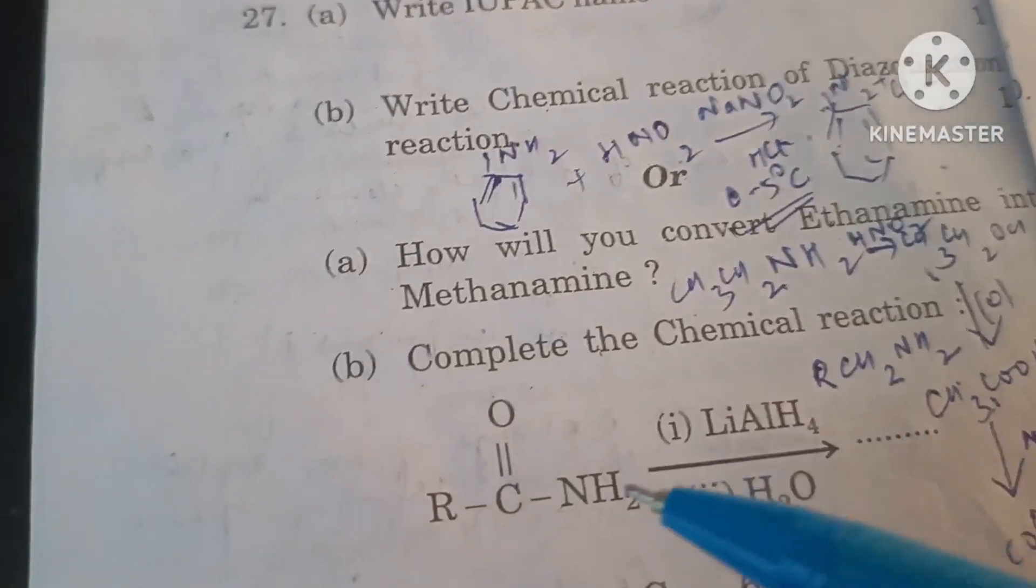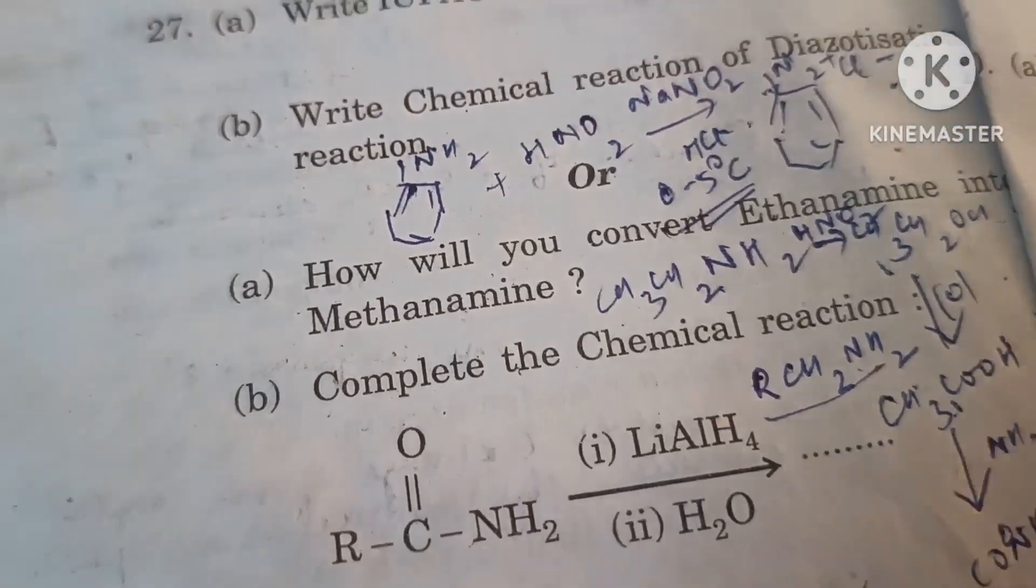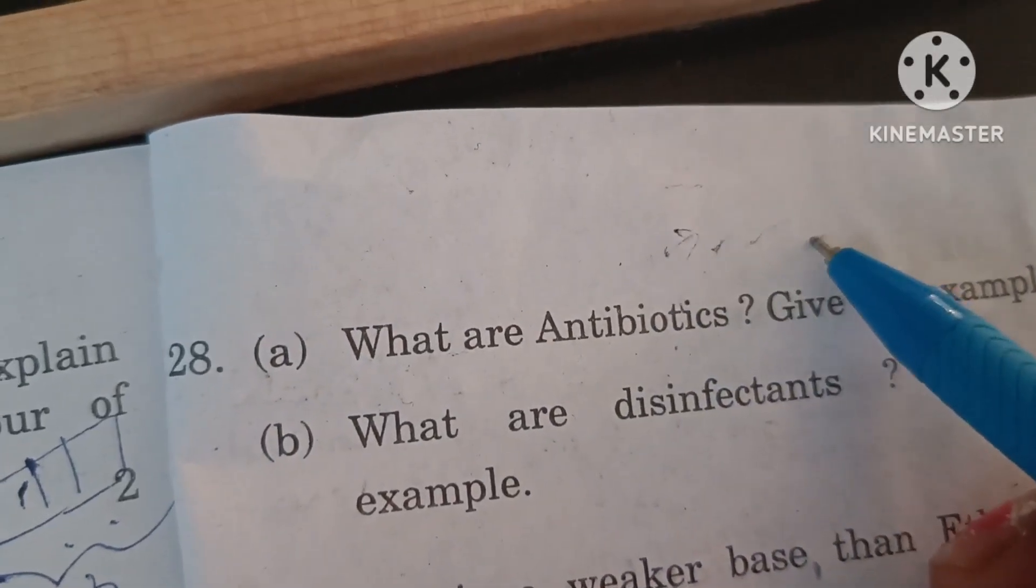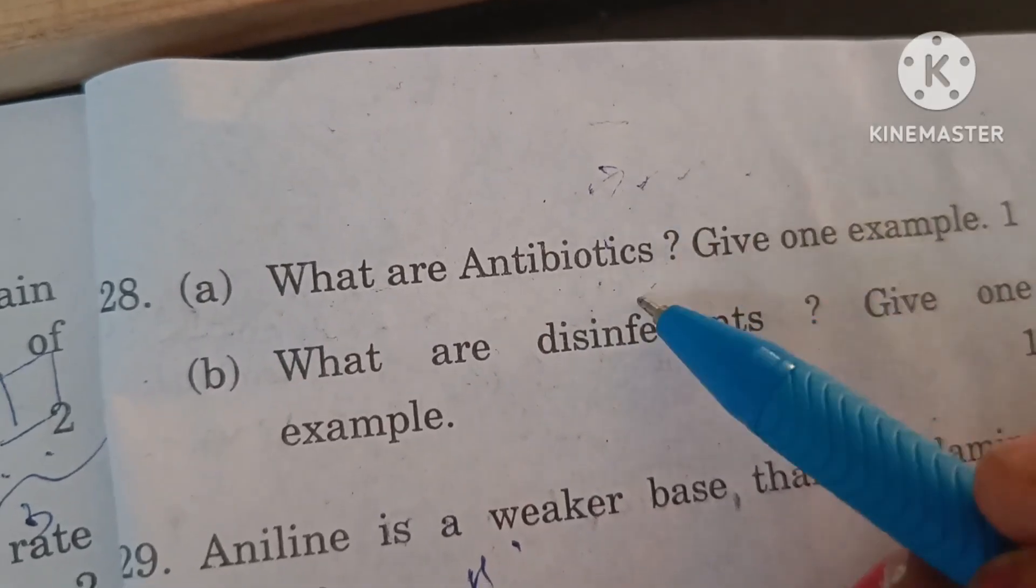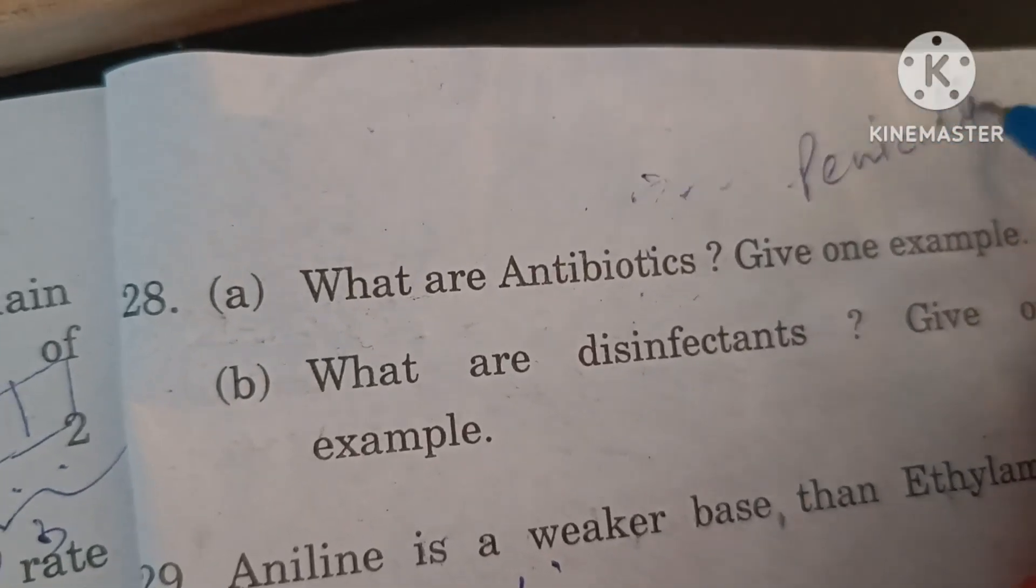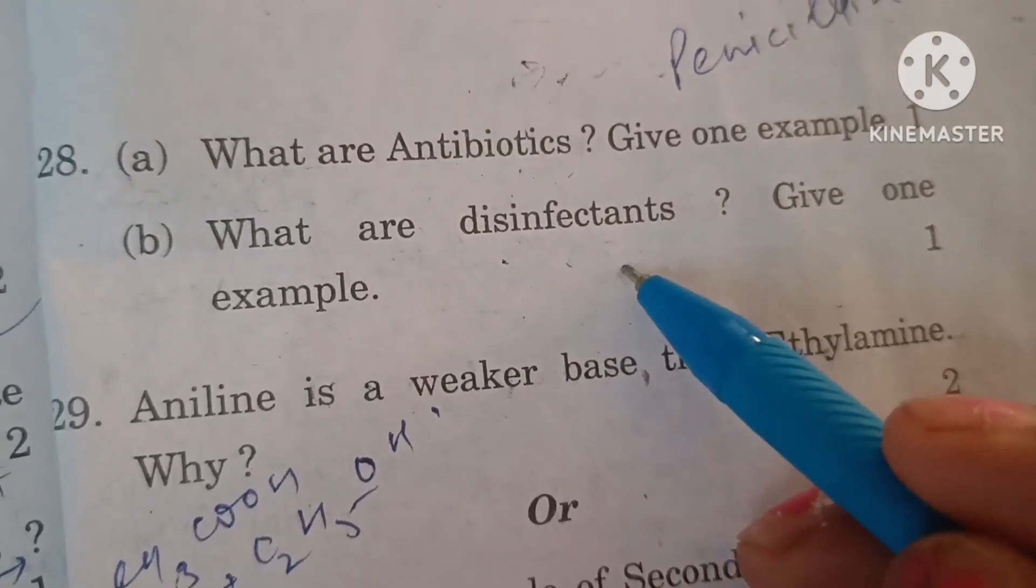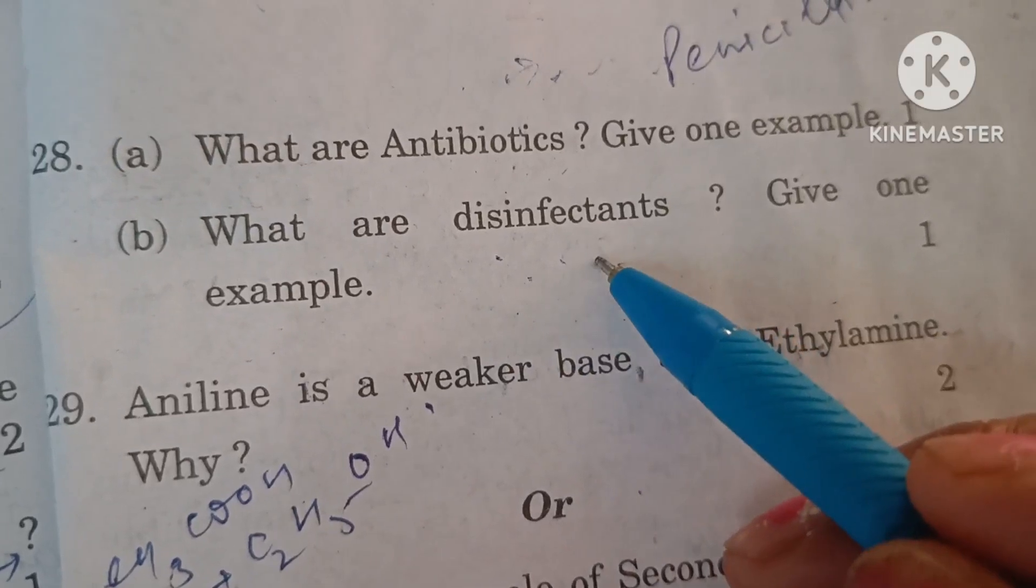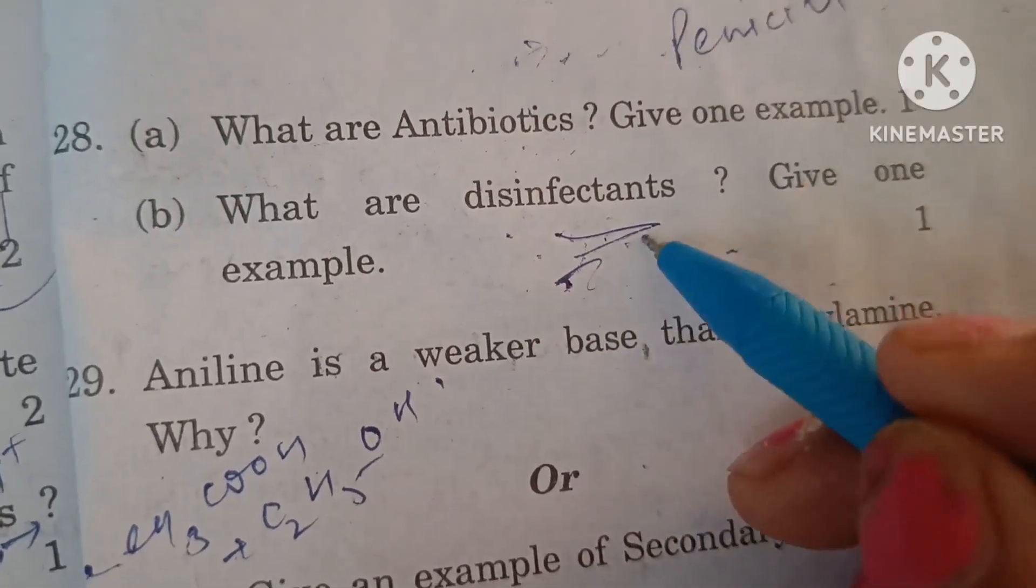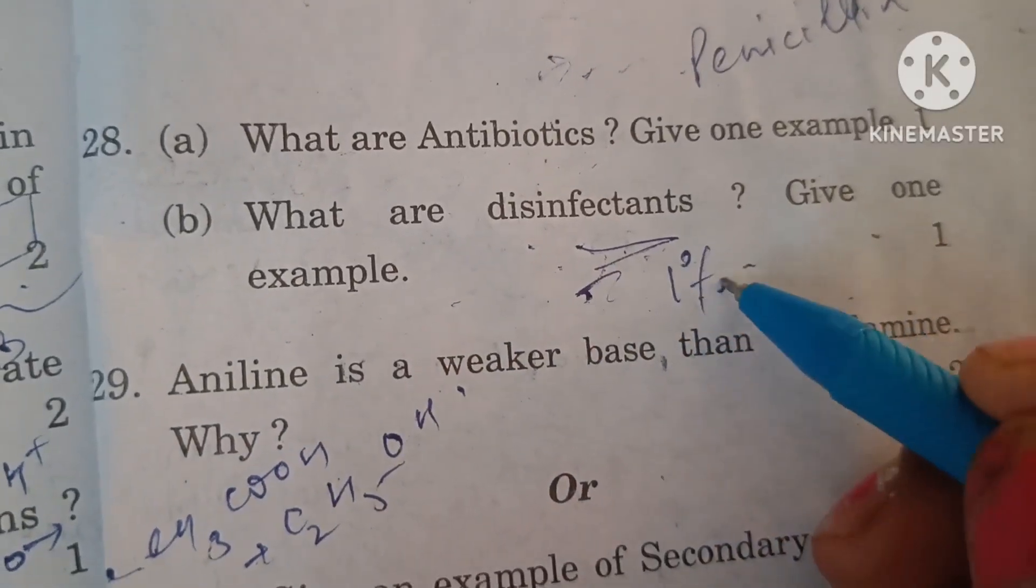Complete the chemical reaction: amide on reduction forms amine. What are antibiotics? Antibiotics are antimicrobials which act against bacteria. Example is penicillin and chloramphenicol. What are disinfectants? Chemical substances used to kill microbes are disinfectants. They are used on hard surfaces and cannot be used on skin. Example of disinfectant is 1% phenol.